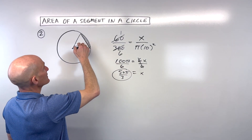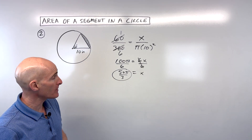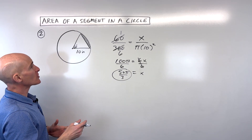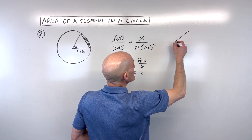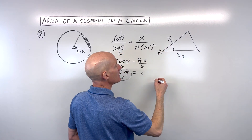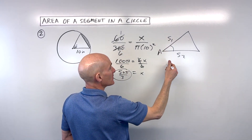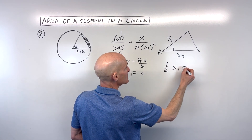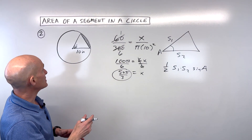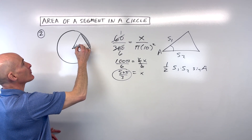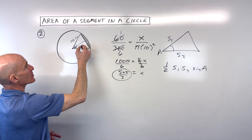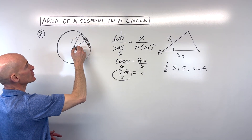Now we have to subtract off the triangle. When you find the area of a triangle, there are a couple of different methods. You could try one half base times height. There's another formula — the side-angle-side area formula: one half times side 1 times side 2 times the sine of the included angle. Another option is to drop a perpendicular, because this is an isosceles triangle with the radius of 10 in both directions. That perpendicular will bisect the base and also bisect the 60-degree angle.